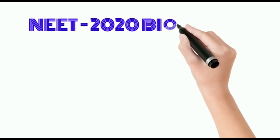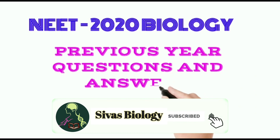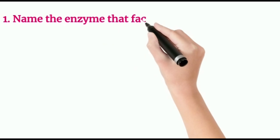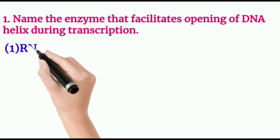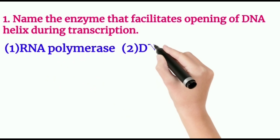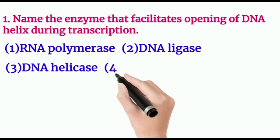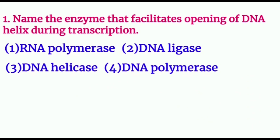In this video we are going to learn last year asked questions — NEET 2020 questions with answers. First question: name the enzyme that facilitates opening of DNA helix during transcription. RNA polymerase forms RNA from DNA; DNA ligase joins broken DNA; DNA polymerase is involved in DNA-to-DNA replication. DNA helicase is involved in opening the DNA double-stranded helix, so the right option is DNA helicase.